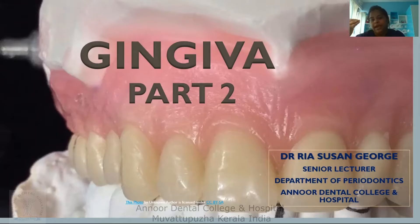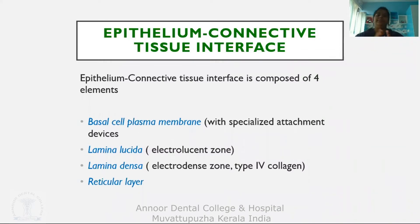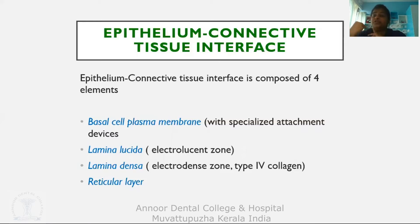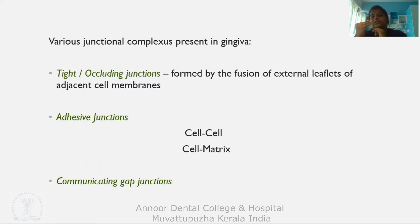Now let's come to the epithelium-connective tissue interface, the area between the epithelium and the connective tissue. This interface is composed of four elements: the basal cell plasma membrane with specialized attachment devices, the lamina lucida which is an electron-lucent zone, the lamina densa which is electron-dense with a lot of type IV collagen, and the reticular layer. This is basically where all intercellular communication happens.